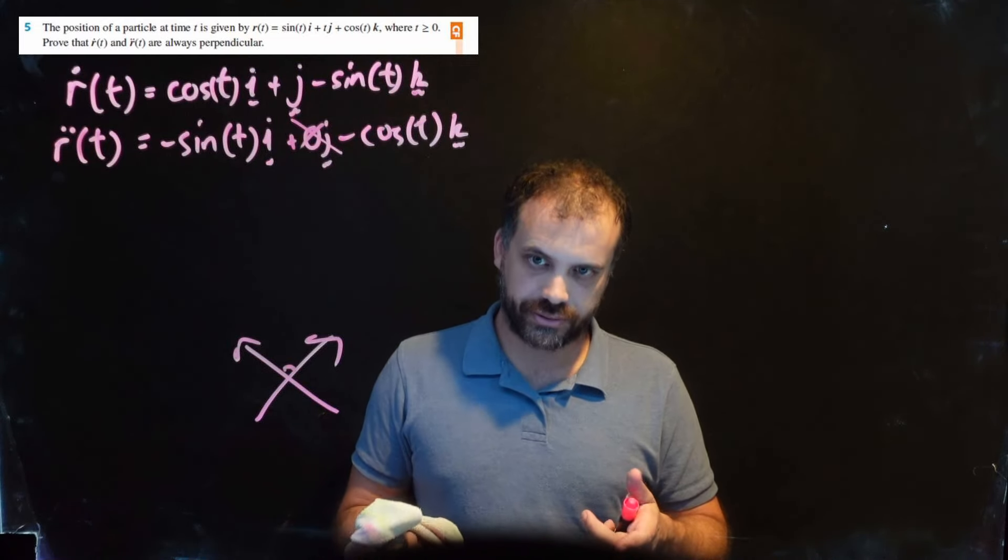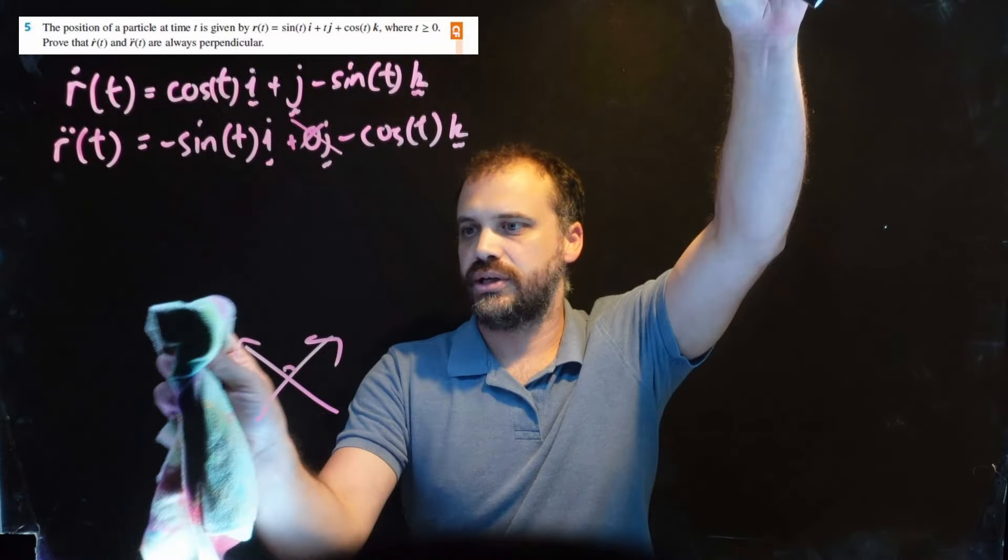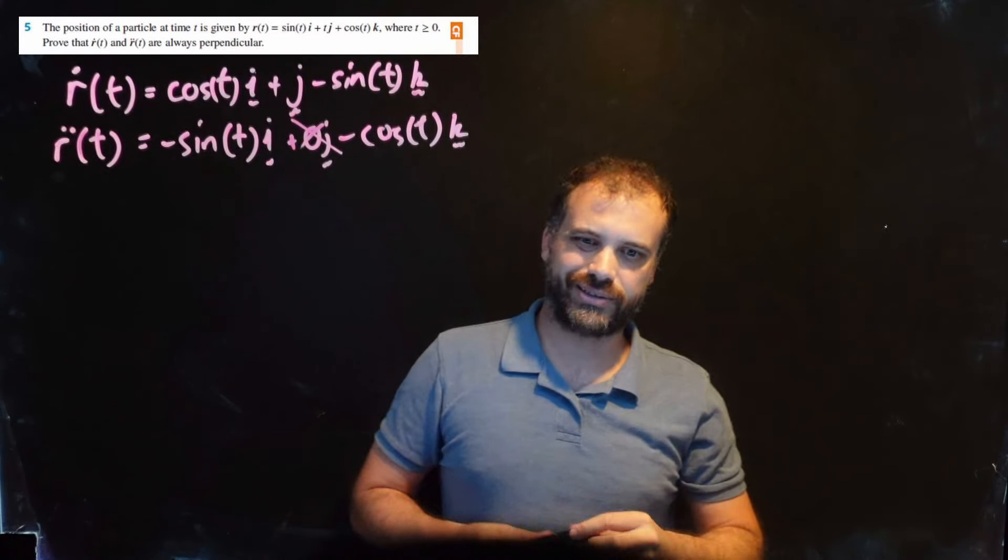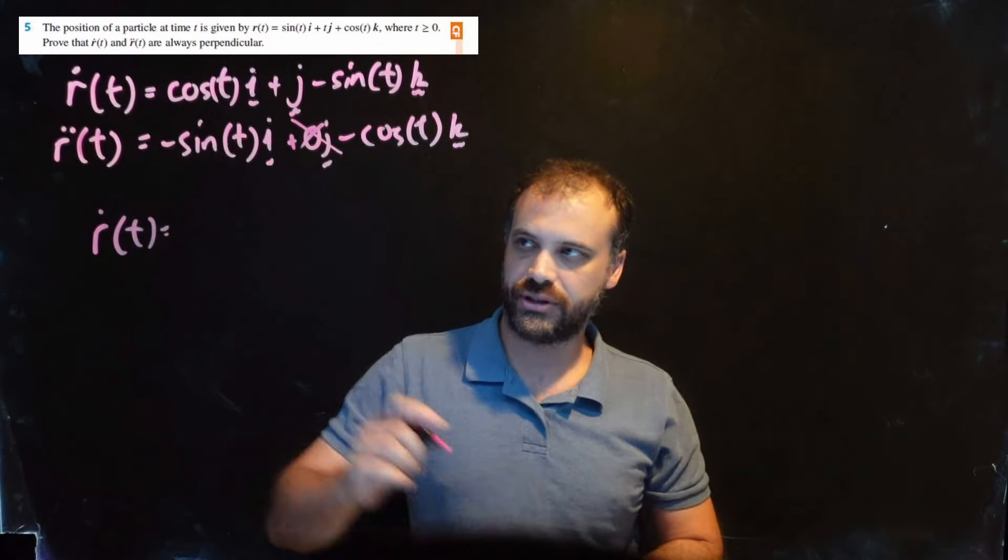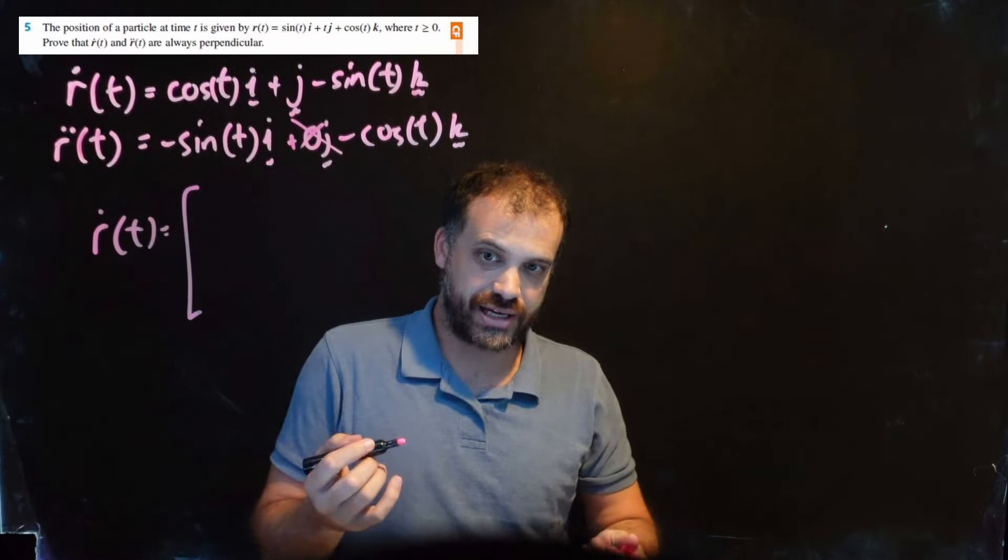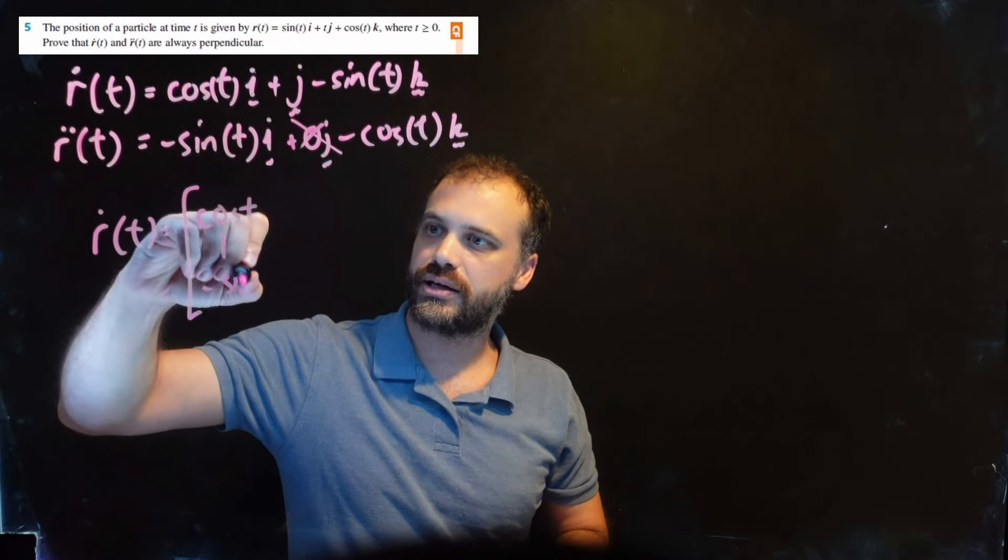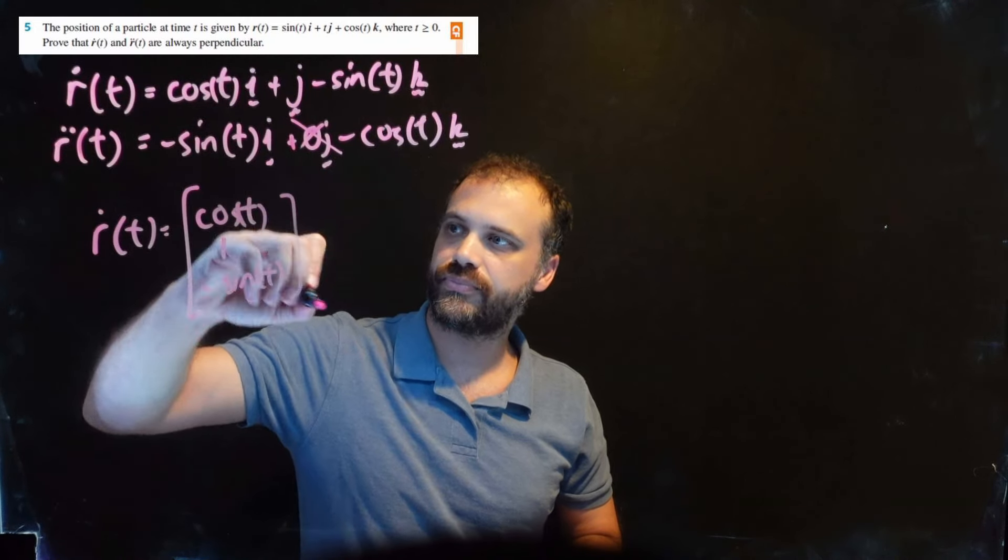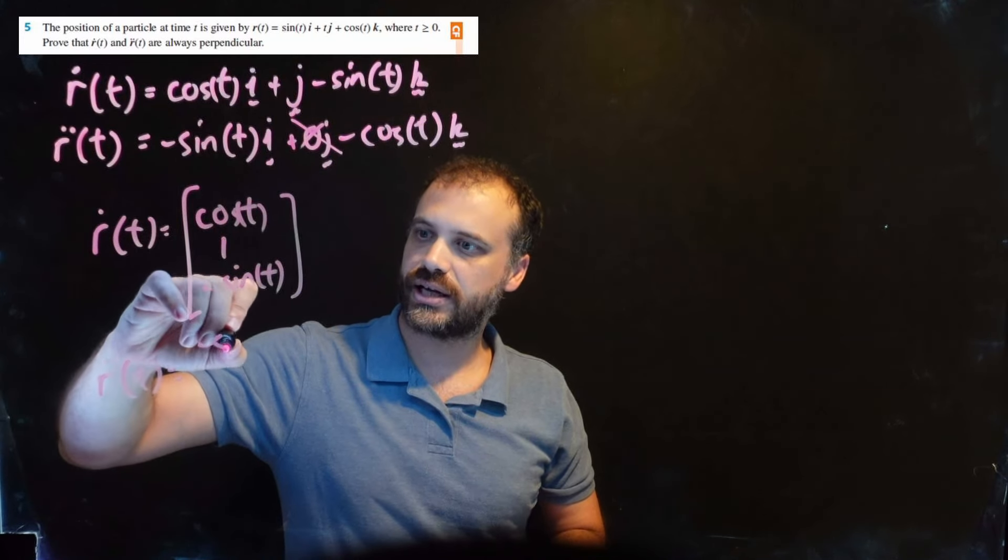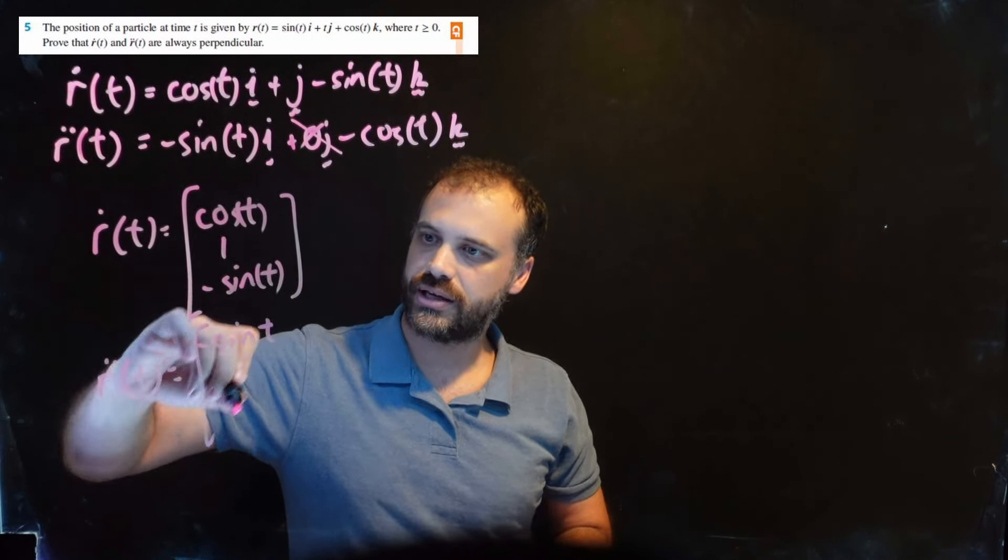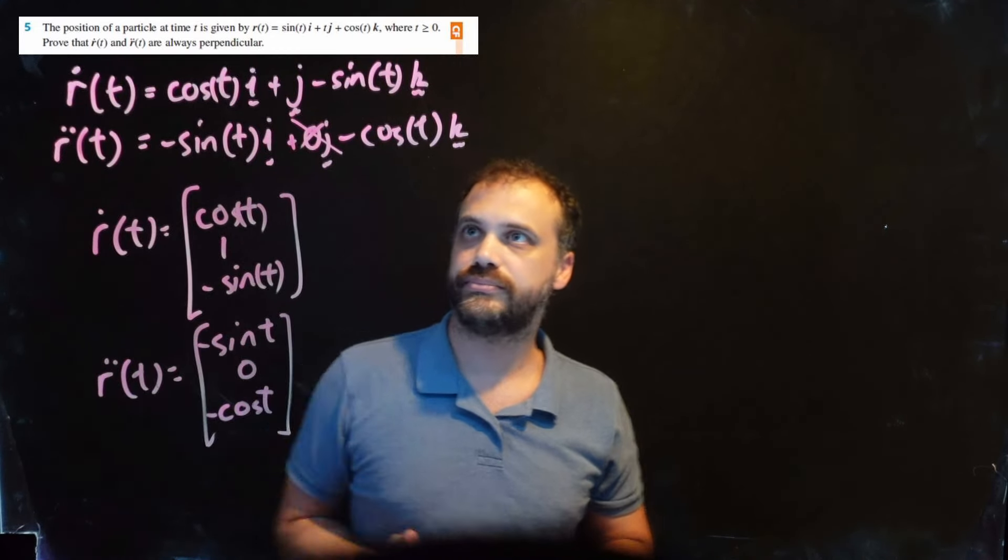Now how do we prove it? Well, perpendicular vectors - we should be thinking about the dot product. I can write this vector function just as a column vector: cos(t), 1, and negative sin(t). And I can write the acceleration function in exactly the same way: negative sin(t), 0, and negative cos(t).